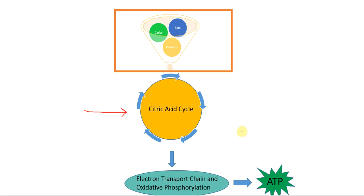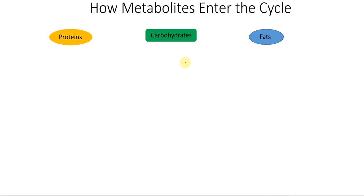So let's take this step by step. First, we'll look at what feeds into the cycle and how it feeds into the cycle. The three groups of foods that we eat are proteins, carbohydrates, and fats, and each of these feeds into the citric acid cycle slightly differently. Carbohydrates, when they're broken down into sugars, can enter glycolysis. Glycolysis is a pretty involved pathway — it's got 10 enzymes — but that's where the sugars will go.